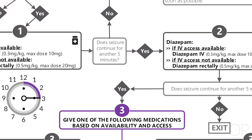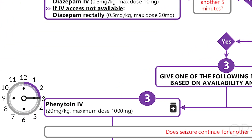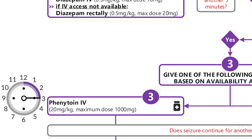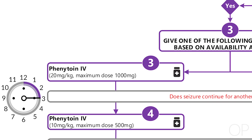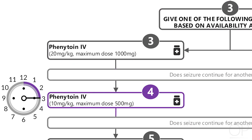Depending on availability and access, your next options are phenytoin or phenobarbital. The loading dose of phenytoin is 20 milligrams per kilogram IV with a maximum dose of one gram. Be careful — infusion can rarely cause bradycardia and hypotension, so the patient's heart rate and blood pressure should be monitored closely. If seizure activity continues for another 15 minutes, you can give a second dose of phenytoin at 10 milligrams per kilogram, maximum 500 milligrams.